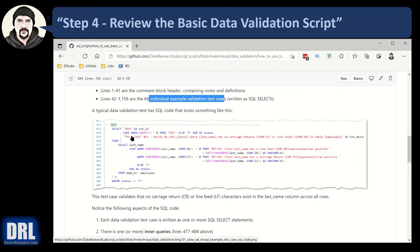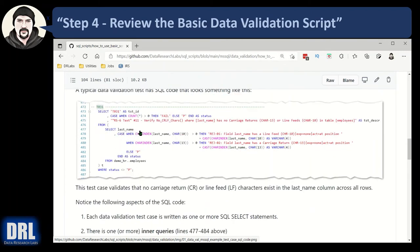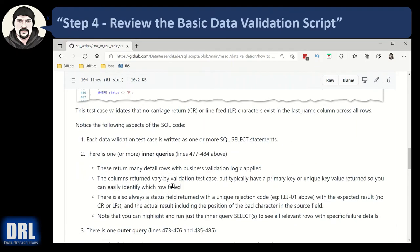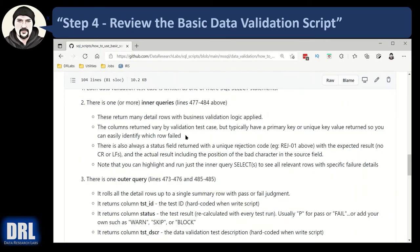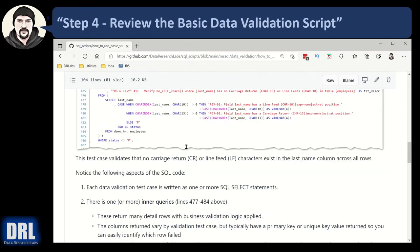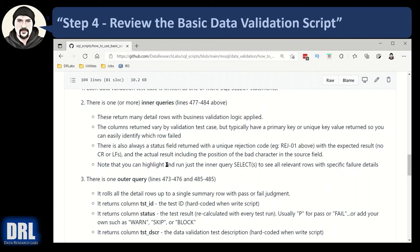Let me zoom in here a bit. Test case 31 is basically looking at the demo HR employees table in the last name field and checking for any carriage return (character 13) or line feed (character 10). And if it finds a problem, it's going to return a rejection code and say, hey, in the last name field I found a line feed at position number 13 or whatever — really handy to troubleshoot when there's a problem. The inner query returns many detail rows with business validation logic applied. The columns returned vary by the validation test case, so as you're writing the cases you have to be very particular in what columns you're returning. Typically you're going to return a primary key or a unique key or some kind of a handle so you can uniquely identify the row that failed, and then the column that failed — you'll also specify that in the SQL. It really lets you isolate quickly what failed and why.